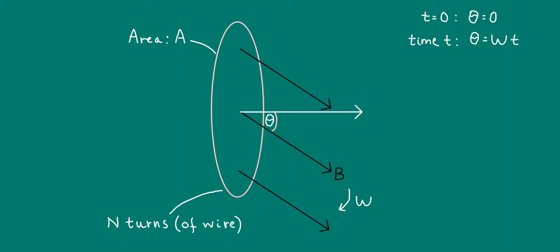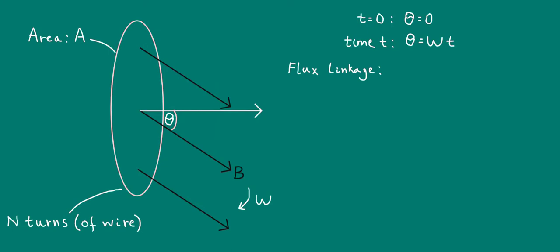With all of this in place, it's quite simple to get an expression for the flux linkage through the loop. Recall that this is simply N times the magnetic flux through the loop, and that the magnetic flux is given by B cosine theta A. Using theta equals omega t, the flux linkage through the loop at time t is simply NB cosine omega t times A.